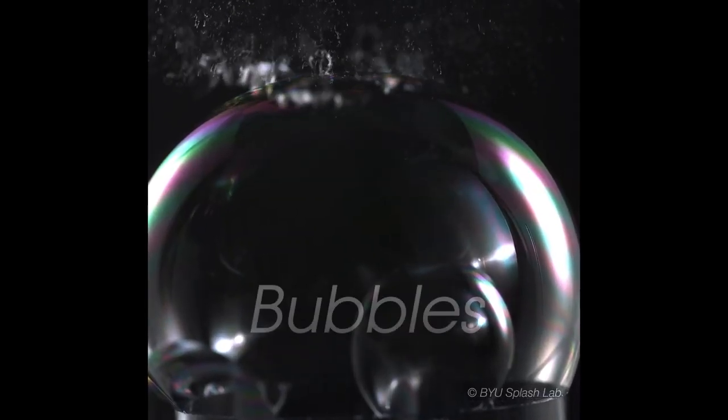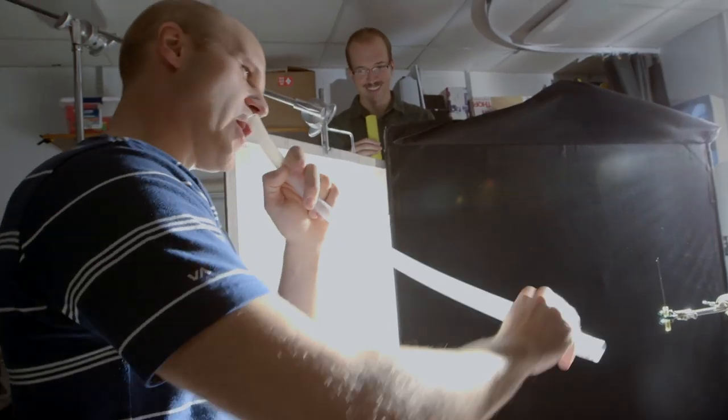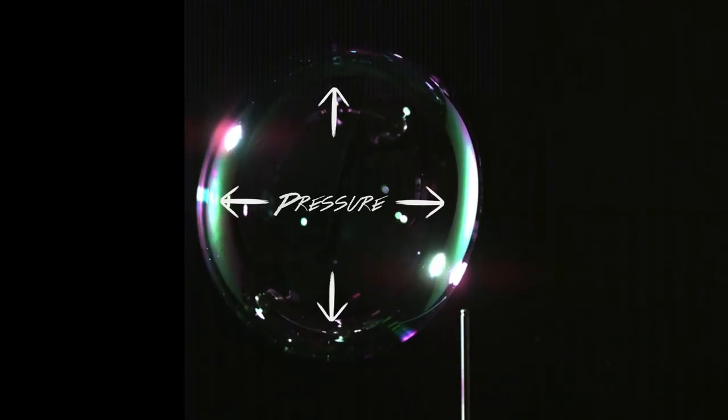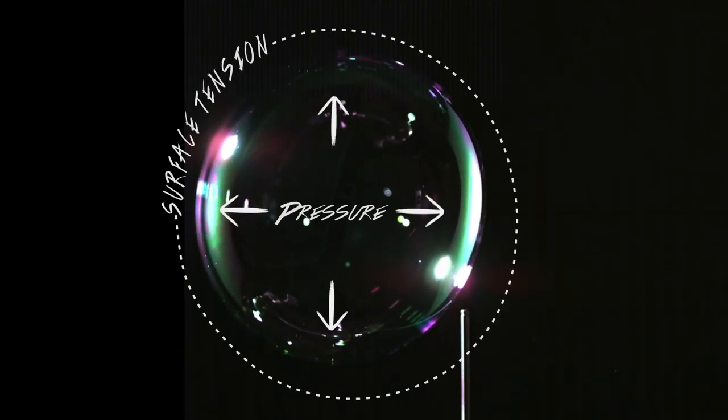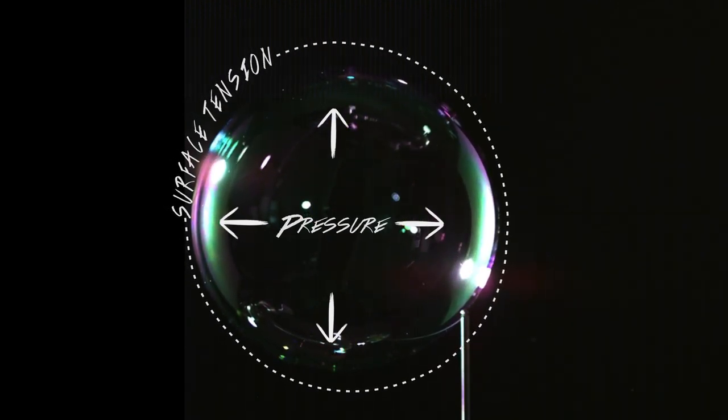These simple three-dimensional objects can teach us a lot about fluid dynamics. When you blow a bubble, it forms a sphere. This is because you blow pressure onto the inside and then the molecules on the surface group together as tightly as possible and that grouping causes it to be equally distributed which forms a sphere.